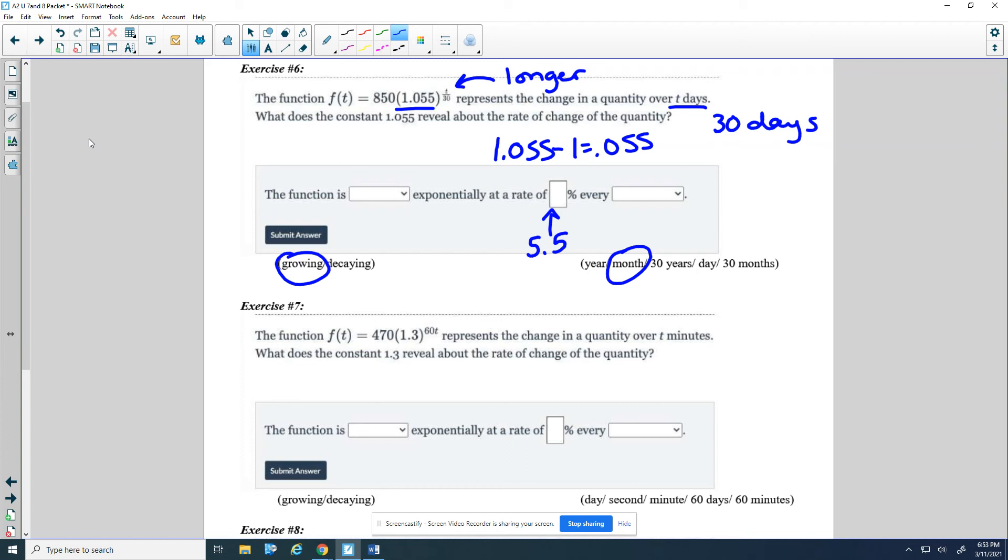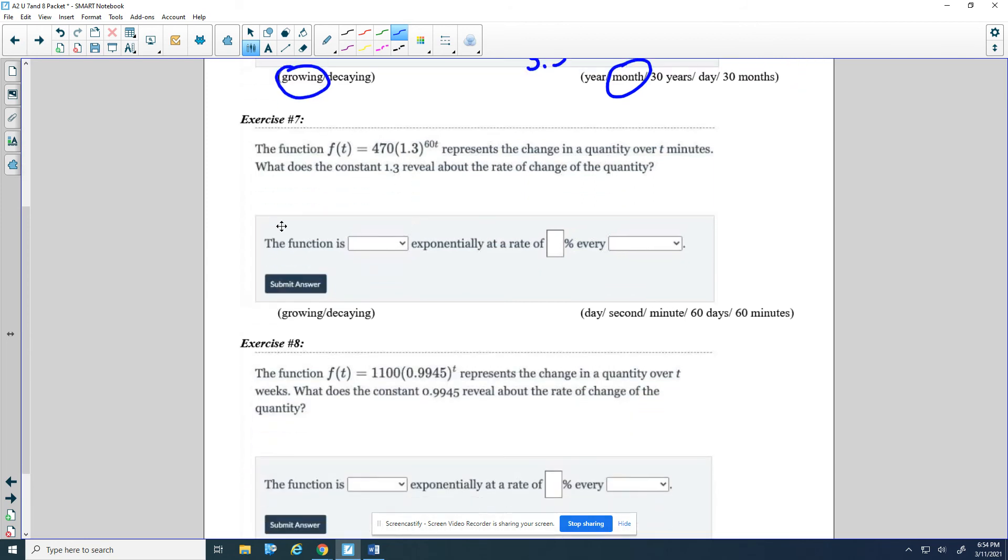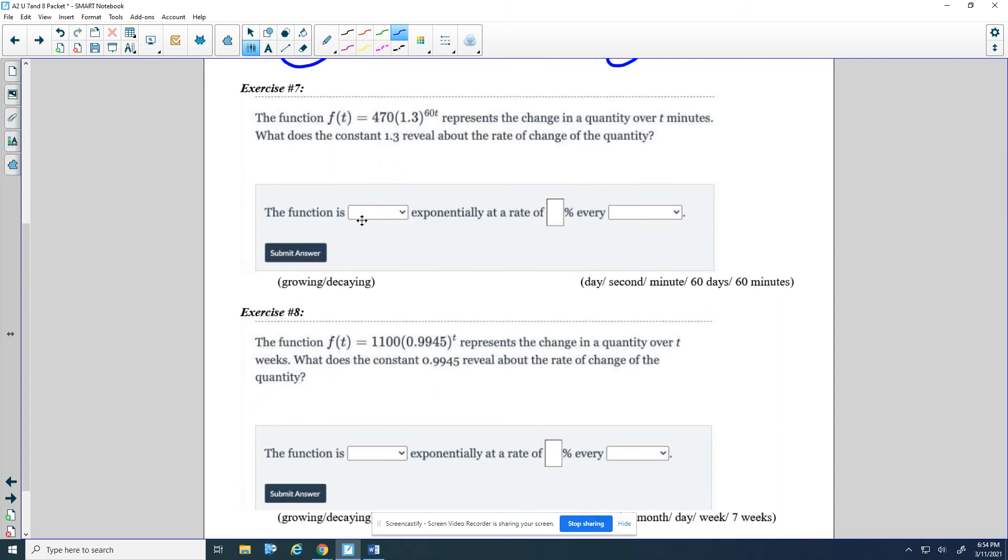So looking at the next one, the function f of t equals 470 times 1.3. And it's not a bad time to pause the video and try these two and then come back. Just kind of look at them first instead of just listening to me. The function f of t is 470 times 1.3 to the 60t. Represents the change in a quantity over 10 minutes. What does the constant 1.3 reveal about the rate of change of the quantity? So first, we're growing again. And that percent, 1.3 minus 1, is 0.3. Be careful, that's 30%.